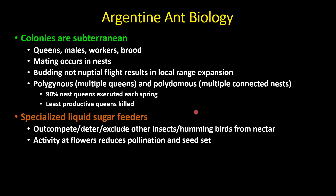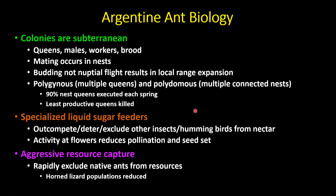These ants are specialized liquid feeders, doing really well on watery sugary foods like nectar and especially honeydew produced by sap-sucking pests like mealybugs, aphids, and psyllids. When densities are high, they can outcompete, deter, and even exclude other insects and hummingbirds from reaching nectar sources. Studies suggest high ant activity at flowers reduces pollination rates and successful seed set. These ants are very aggressive with respect to resource capture — not through biting and stinging, but through sheer numbers. Argentine ants have been implicated in declines of horned lizard populations, which won't feed on this invasive species.